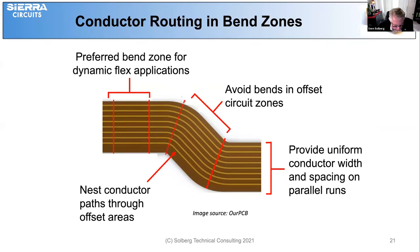For conductor routing in the bend zones, to achieve maximum dynamic flex life and reliability, conductors in the bend area should adhere to the following: conductors should be routed perpendicular to the bend area; conductors should be evenly spaced across the bend area; do not apply or plate additional metals in the bend area; conductors should maintain a uniform width in the bend area; and do not place SMT components or plated through hole vias in the bend area.